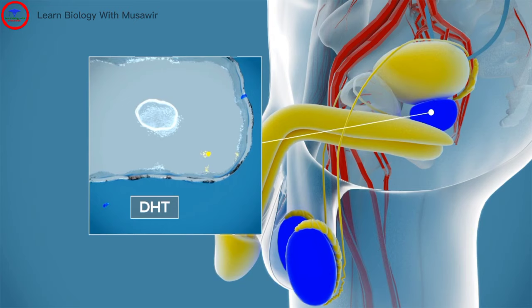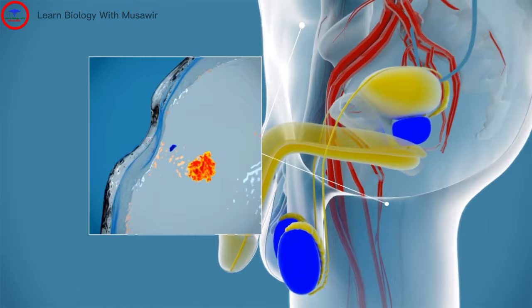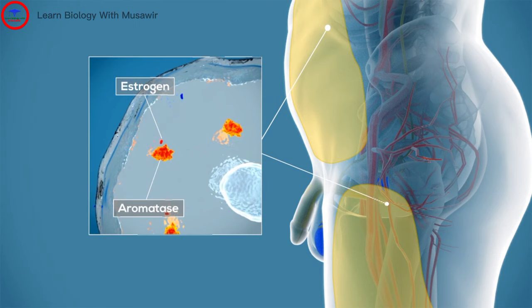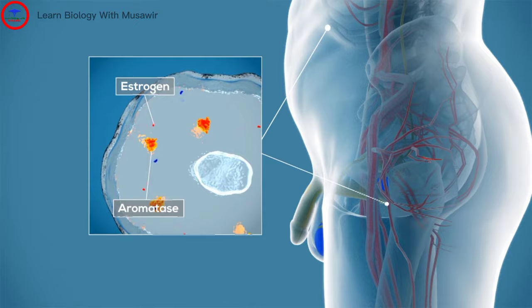A portion of testosterone is also converted into estrogen by an enzyme called aromatase. Aromatase is primarily located in adipose or fatty tissue. High levels of aromatase can lead to low testosterone levels due to excess estrogen production.